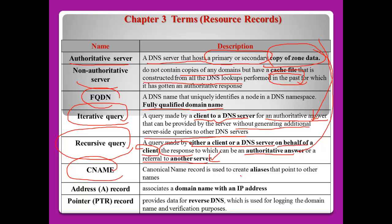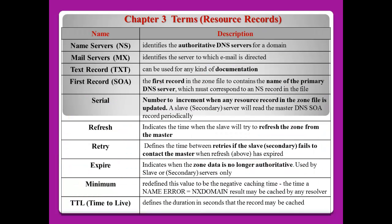CNAME is used to create aliases — another name for a host. The A record means domain name with IP address. PTR means pointer, which provides data for reverse DNS — normally IP address to domain name. NS means name servers. MX means mail exchange — the mail server. TXT means text, normally used for any kind of documentation. SOA means start of authority — the first record in the zone file, containing the name of the primary name server for the domain.